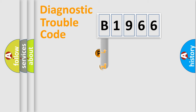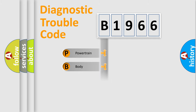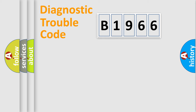First, let's look at the history of diagnostic fault code composition according to the OBD2 protocol, which is unified for all automakers since 2000. We divide the electric system of an automobile into four basic units: Powertrain, Body, Chassis, and Network.